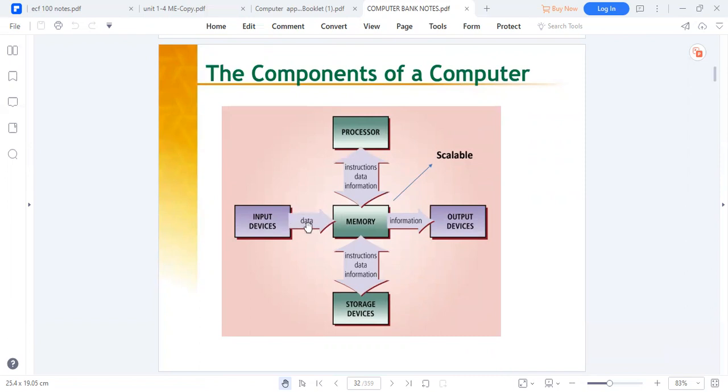The input receives data. The CPU has a processing part which receives instructions and processes information. The memory part stores data which would be needed for processing or storage.